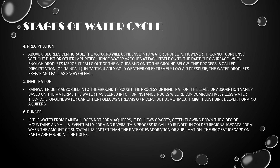Fifth is infiltration. Rainwater gets absorbed into the ground through the process of infiltration. The level of absorption varies based on the material the water has seeped into. Sixth is runoff. If the water from rainfall does not infiltrate, gravity causes it to flow down the sides of mountains and hills.